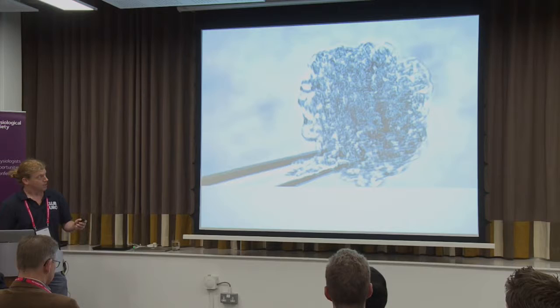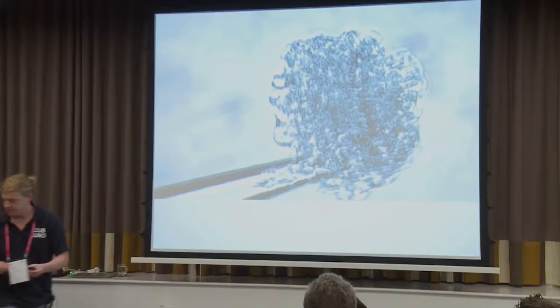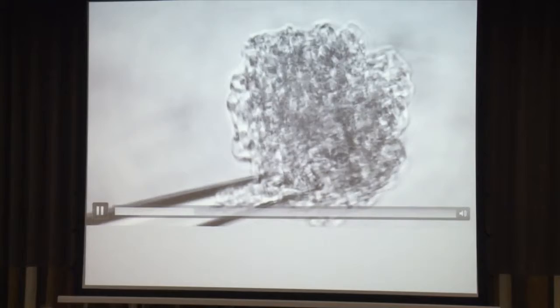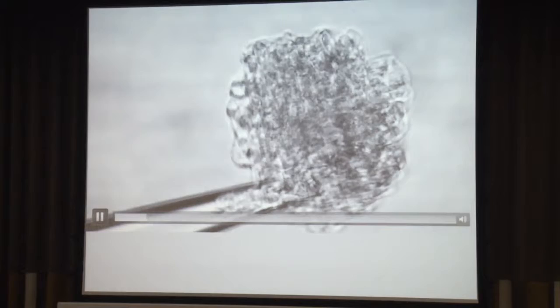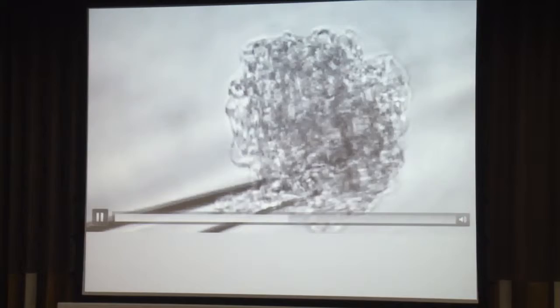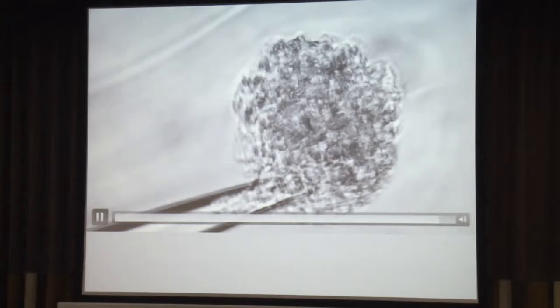So here we have a glomerulus isolated. What happens is we have a ball of capillaries, and we'll put some concentrated albumin on the outside, and it shrinks. We have an osmotic pressure change by putting the albumin on the outside, and it'll go forward and visibly gets smaller.